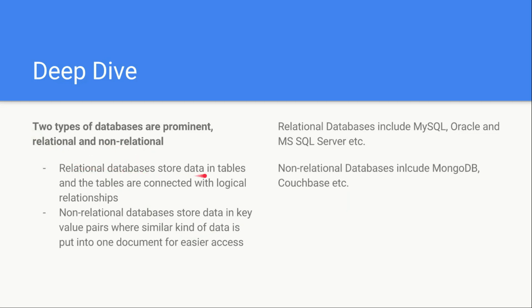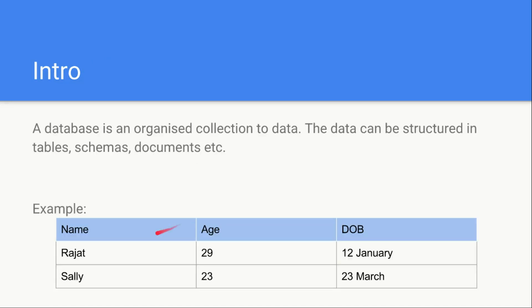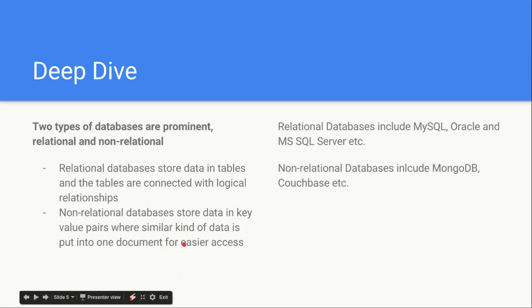Relational databases store data in tables, and the tables are connected with some sort of logical relationship — that is why these databases are known as RDBMS, or Relational Database Management System. Non-relational databases, on the other hand, store data mostly in key-value pairs. For example, the key can be 'name' and the value can be 'Rajat'; or the key can be 'age' and the value is 29, and so on.